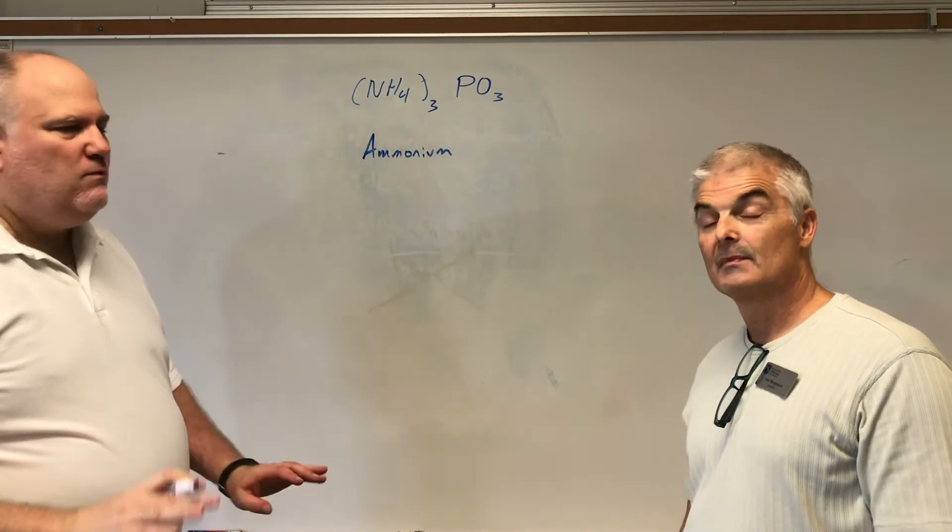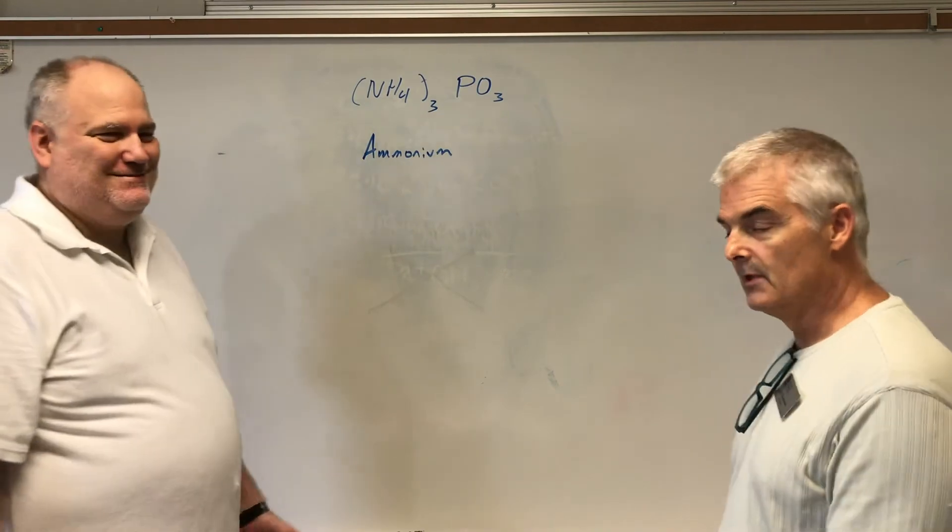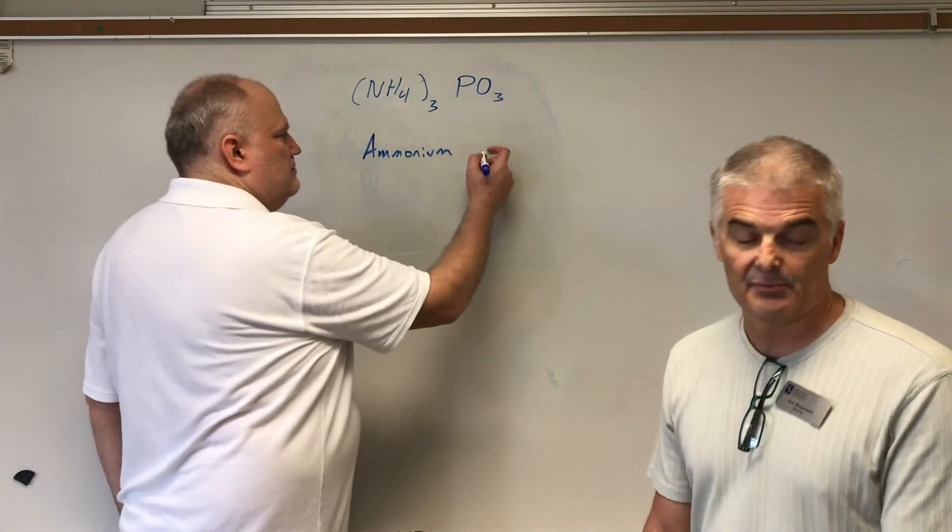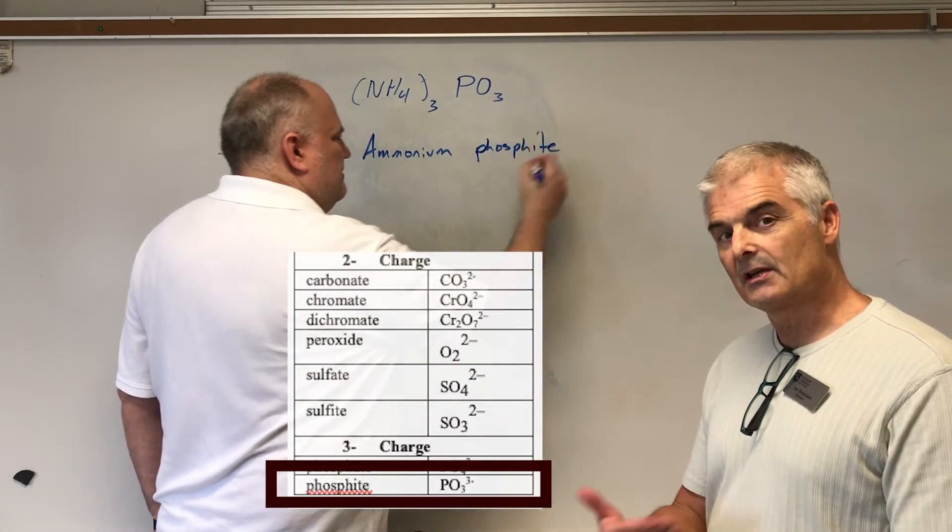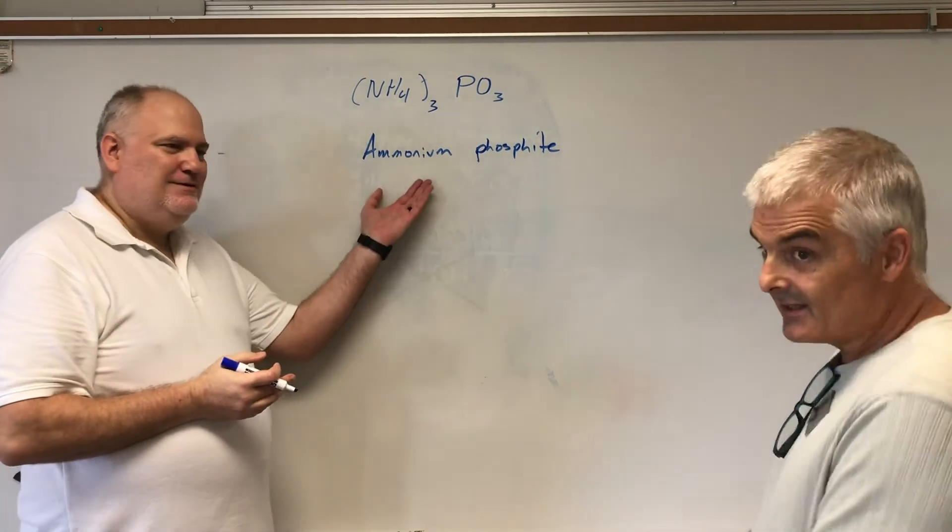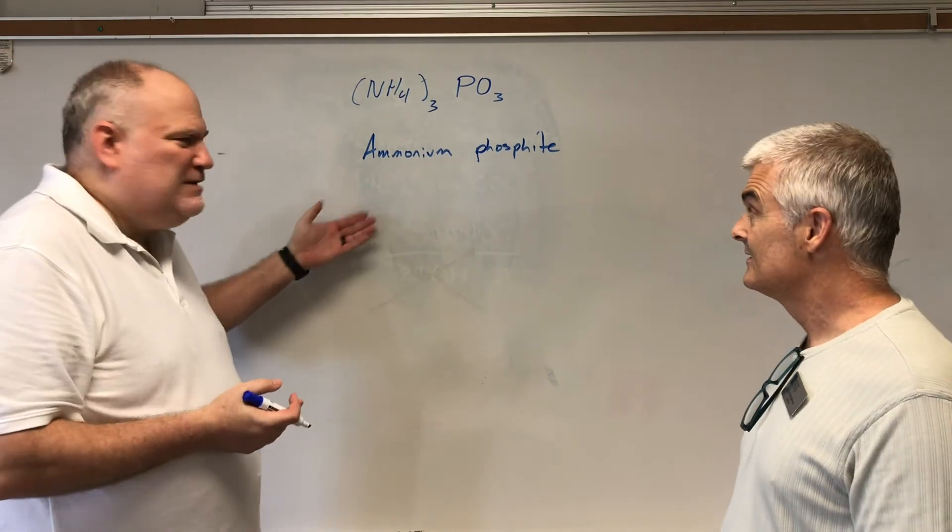And then we just name PO3. PO3 - again, trusty table - it's phosphite. Don't get confused with phosphate, which is PO4, but you'll find that on your table. That's it guys. This is the end of the naming, you don't have to do anything else with it, which seems almost too simple when you have all this ugliness here. This ends up being the name: ammonium phosphite.